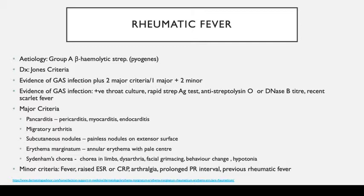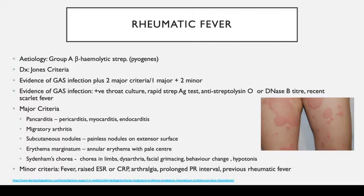Evidence of Group A strep infection includes recent scarlet fever, positive throat culture, rapid strep antigen tests, or antistreptolysin O titre (ASOT). Major criteria include pancarditis (pericarditis, myocarditis, and endocarditis), migratory arthritis (red, hot, swollen joint that moves to other joints), subcutaneous nodules (painless nodules on extensor surfaces), erythema marginatum, and Sydenham's chorea — a neurological symptom with jerky limb movements, hypotonia, and facial grimacing. Minor criteria include fever, raised inflammatory markers, arthralgia, prolonged PR interval, and previous rheumatic fever.